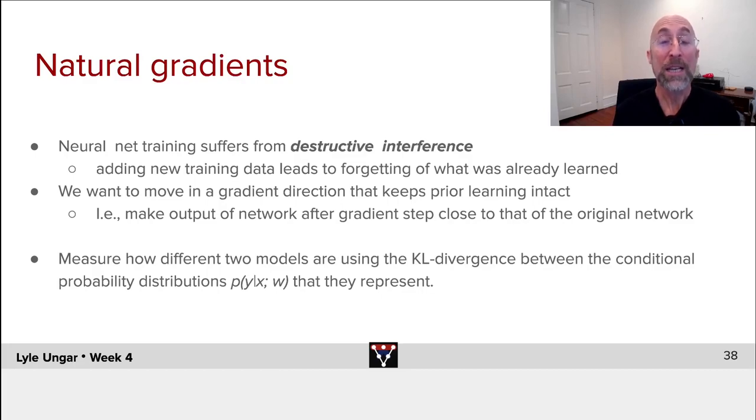You can view any network which does classification as giving you a probability distribution over outputs y as a function of the inputs x. The neural net learns the probability of y given x, the probability distribution of the labels given, say, the images as input.